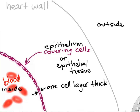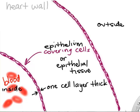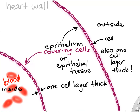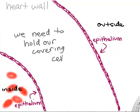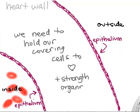We call that epithelium (singular) or epithelia (plural). On the outside surface of the heart, we add another single layer of cells — that's also epithelium. Each one of those little cells is an epithelial cell, just one cell layer thick on the outside of the heart, for protection and to provide a nice smooth lining. We need to hold those epithelial cells to the heart, and that's where connective tissue comes in.